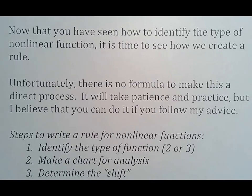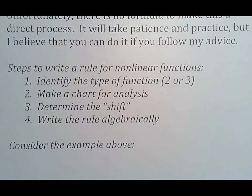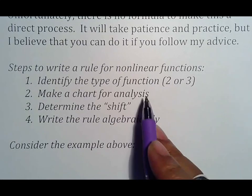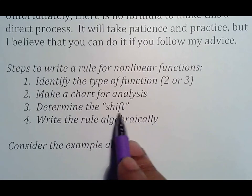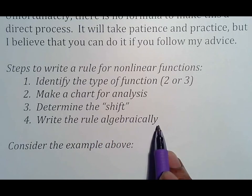Unfortunately, there is no formula to make this a direct process. It's just going to take patience and practice. What you want to do is identify the type. Is it a second power, third power, fourth power, whatever it might be. And then you want to make a chart. Make sure you copy exactly what I do because the homework is going to practice that skill. And if you don't copy the homework notes, then you're going to be asking questions. You make your chart and you determine what we call the shift. And then we write the rule at the end.